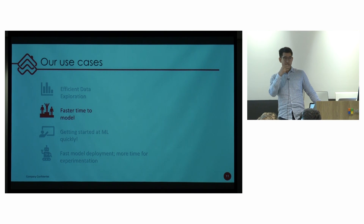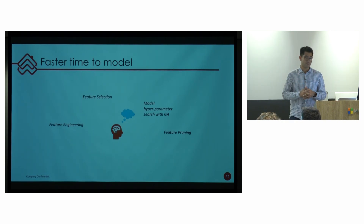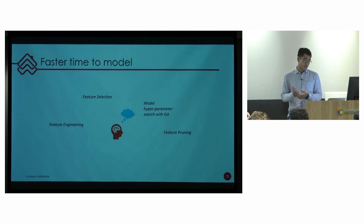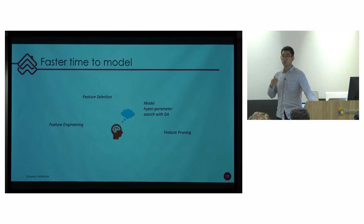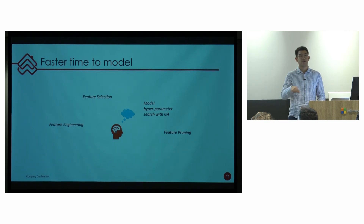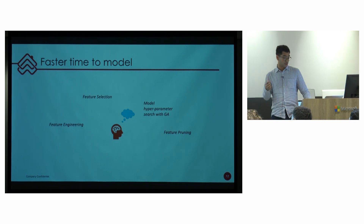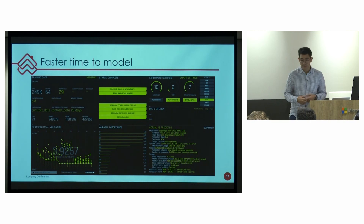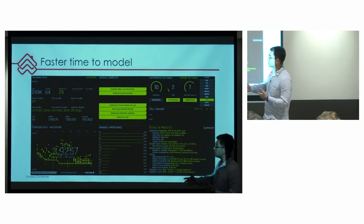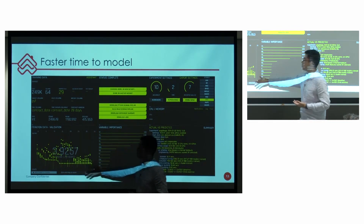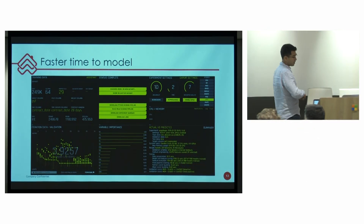What we found with doing the initial data exploration is that it also enables faster time to model. It does a lot of the tasks that we would usually be doing by hand in Python — feature engineering, feature selection, and hyperparameter tuning. The cyclic process of data science, where we are constantly evaluating features and adding more features and iterating through different models — we found that Driverless AI fastened that process quite a bit. You can put the data into Driverless AI and get quite a bit of lift from the baseline models without us doing anything.